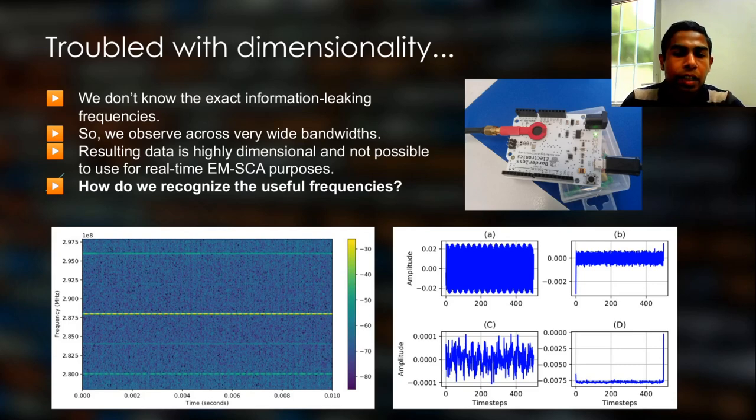But this causes a large amount of highly dimensional data making it difficult to process them. For example, this spectrogram here illustrates the data acquired from an Arduino Leonardo device with a bandwidth of 20 megahertz centered at 288 megahertz. If we used a short term Fourier transform window of one millisecond to convert the time domain signal into a frequency domain, we end up with 20,000 potential frequency channels.